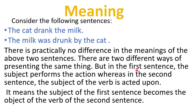In the first sentence — 'the cat drank the milk' — the subject, that is the cat, performs the action. Whereas in the second sentence — 'the milk was drunk by the cat' — the subject of the verb is acted upon. The meaning is the same; the difference is who is performing the action and to whom the action is done.